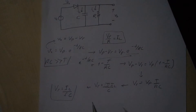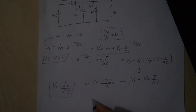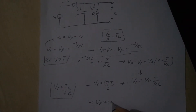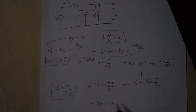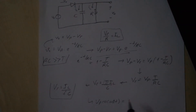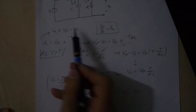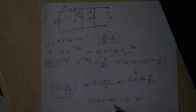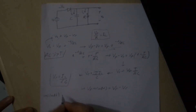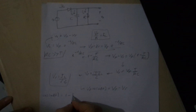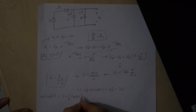Let's continue. V0 equals VP cosine omega t, but we will use delta t. V0 is equal to VP minus VR, and V0 is VP times cosine omega delta t. Here we have a second assumption: cosine omega delta t equals 1 minus one-half omega delta t squared.